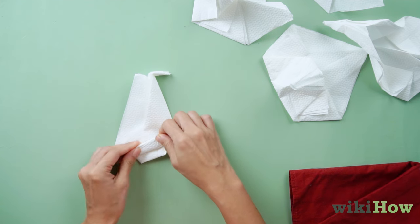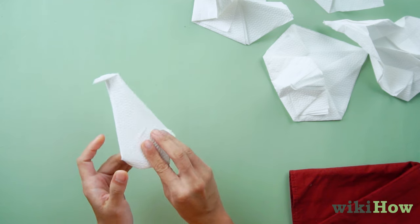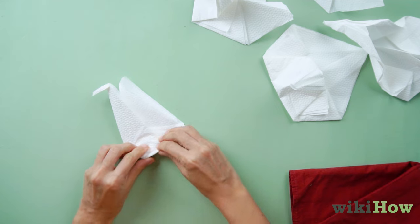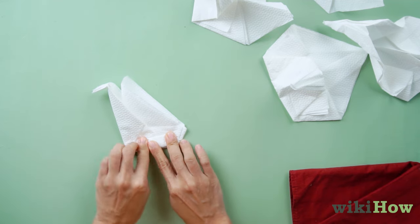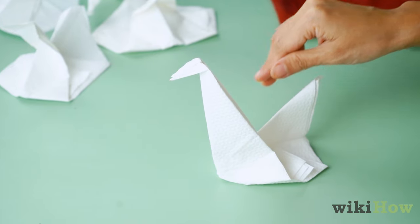Then fold up the flap on the bottom of the shape to make half of the base. Flip the napkin over again and do the same thing on the other side. Open up the folds at the bottom and stand your swan up on its base.